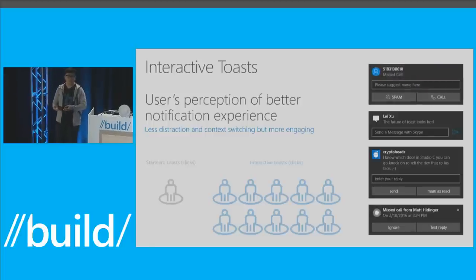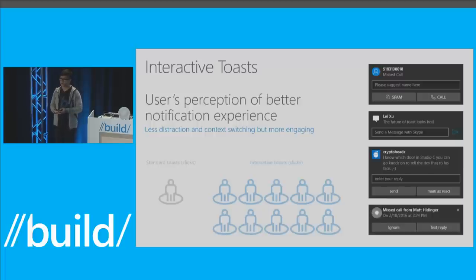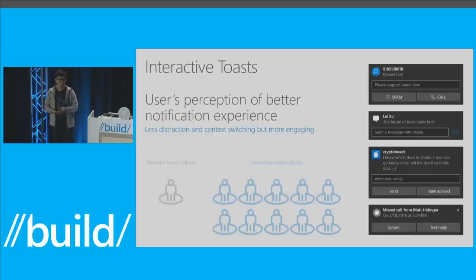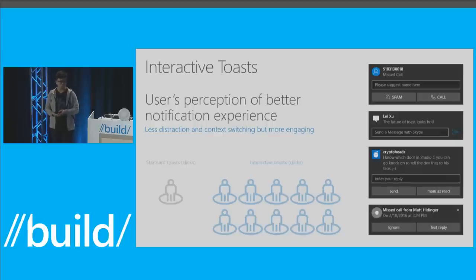Here are examples of how apps are using interactive toast: Cortana pops up missed call info from your phone — you can ignore it or text-reply directly from the toast. The Reddit client Read It lets you reply to a message or mark it as read. Our Messaging app uses quick reply for SMS. Another interesting data point: two out of three text messages on Windows devices are now replied through interactive toast. And True Caller, a call filtering app, lets you call back or mark a caller as spam.